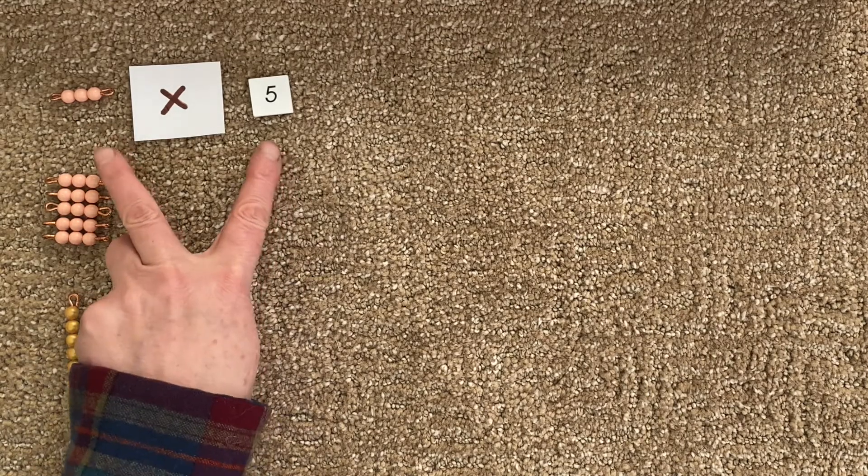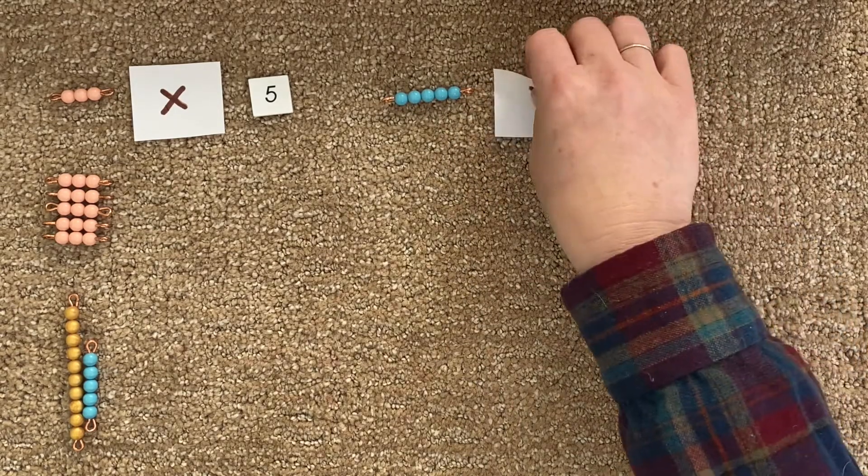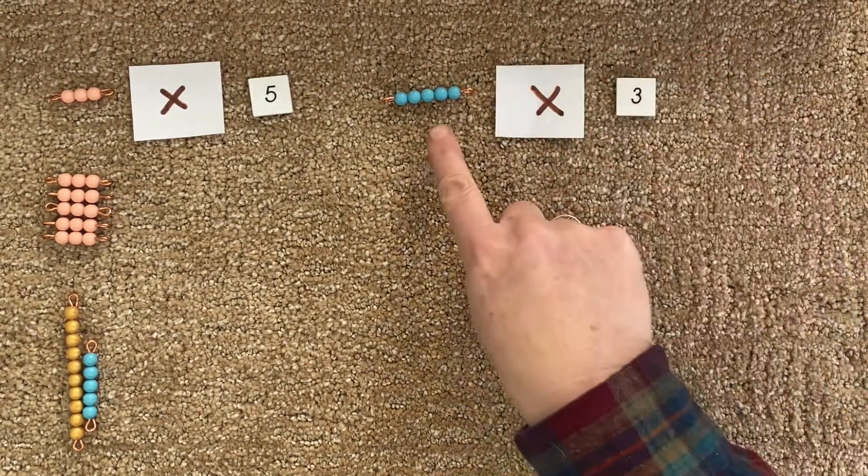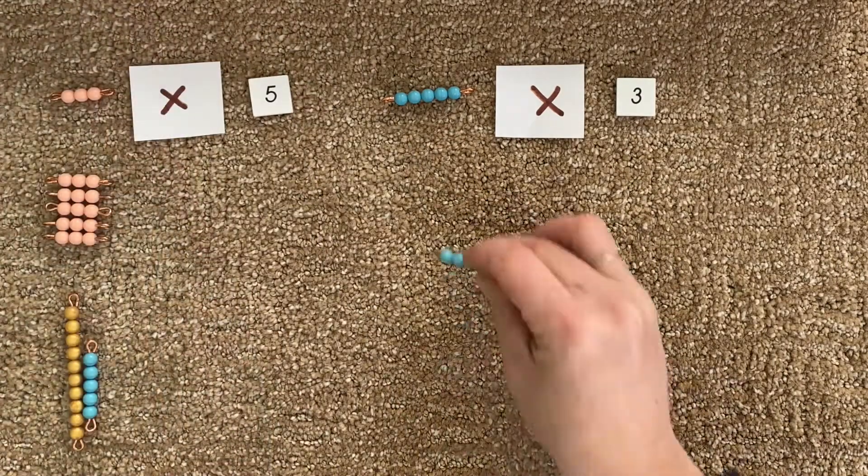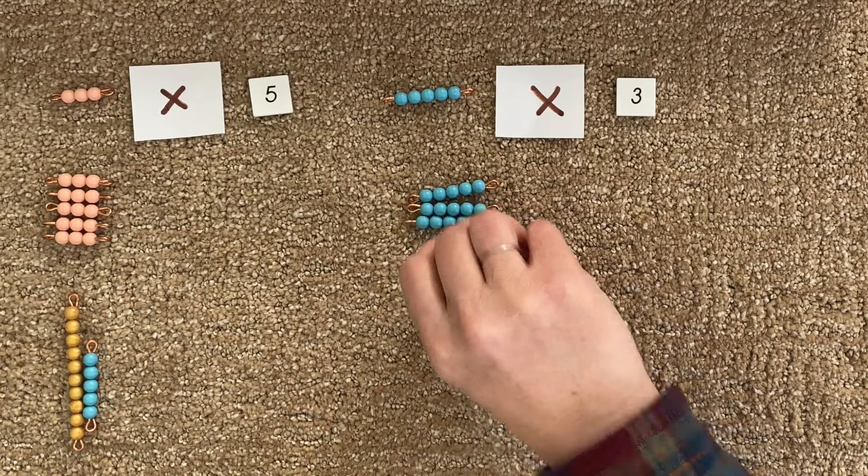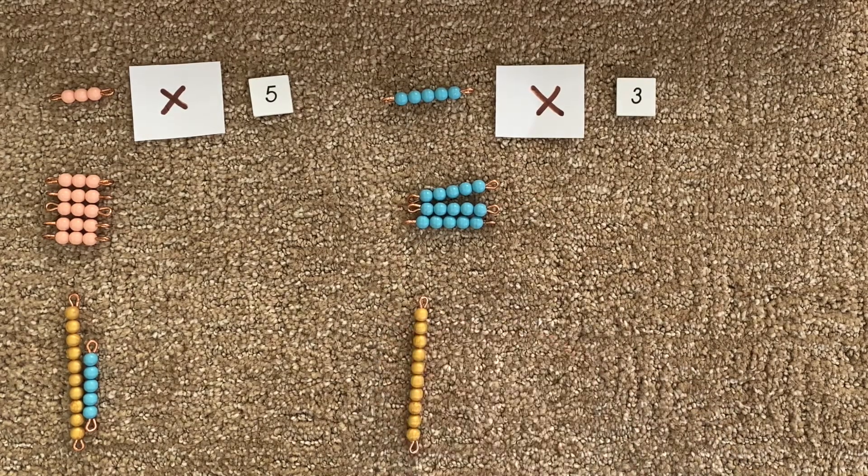Now let's switch these two numbers around. We're going to take a five and multiply it by three. So let's take our five, three times: one, two, three. And what's the product there? 15 again.